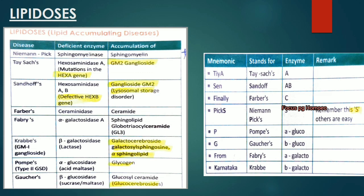Farber's disease has deficiency of ceramidase with accumulation of ceramide. Fabry's disease has alpha-galactosidase A deficiency, with accumulation of globotriaosylceramide. Krabbe's disease has deficient beta-galactosidase with accumulation of galactocerebroside, galactosphingosine and psychosine. Pompe's disease has alpha-glucosidase deficiency with glycogen accumulation. Gaucher's disease has beta-glucosidase deficiency with glycosylceramide (glucocerebroside) accumulation.